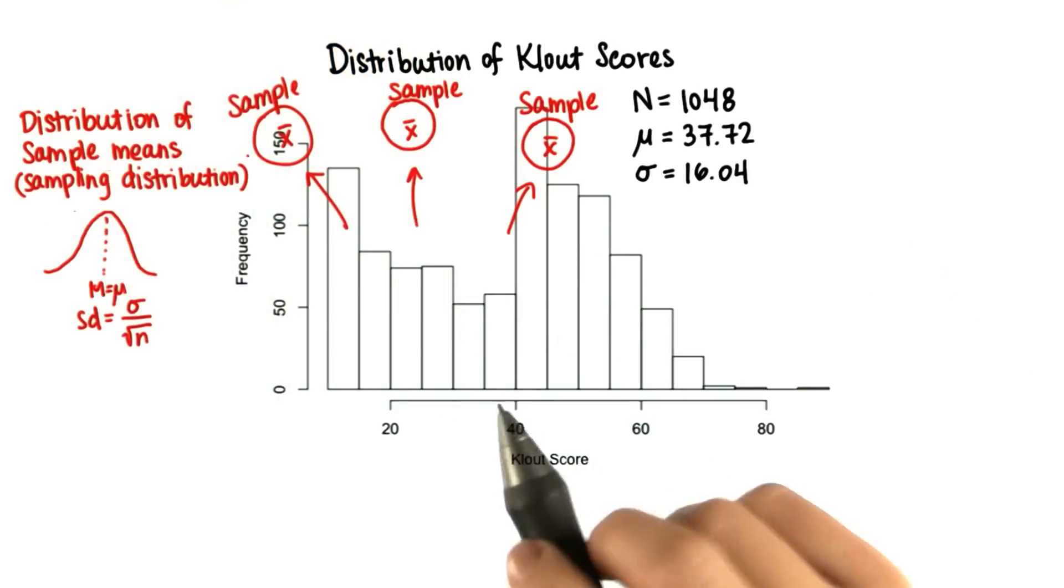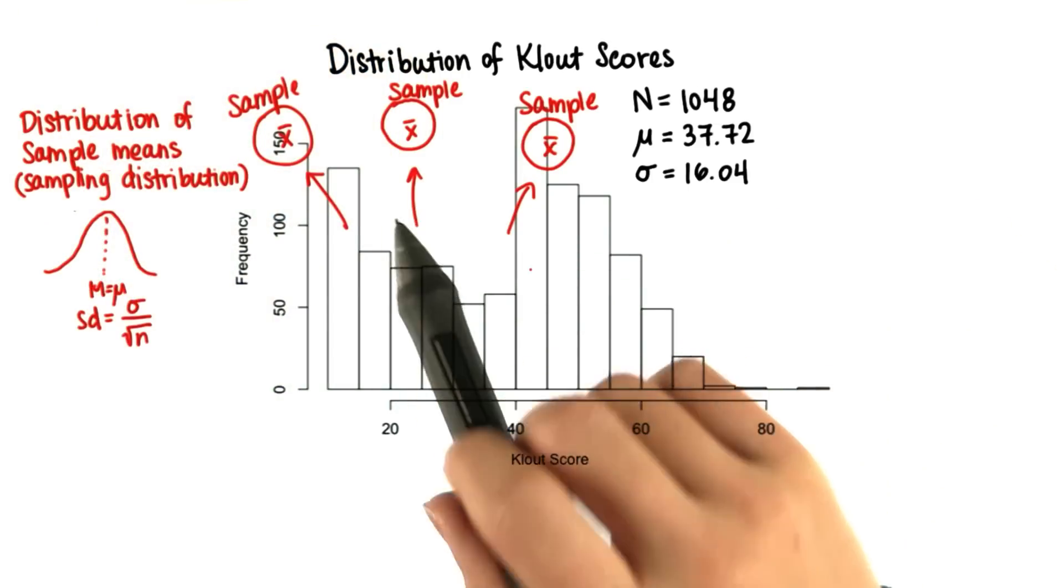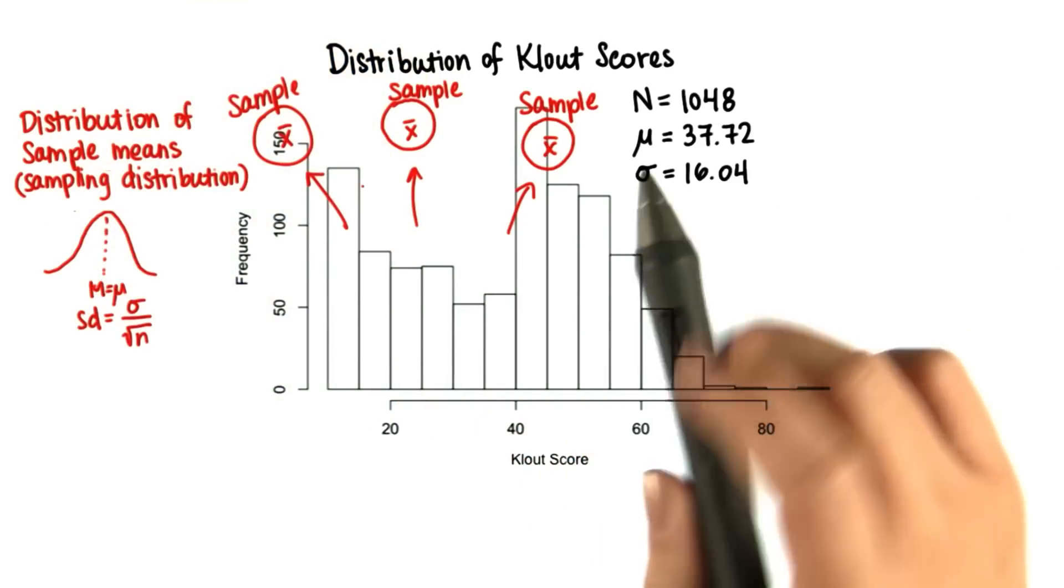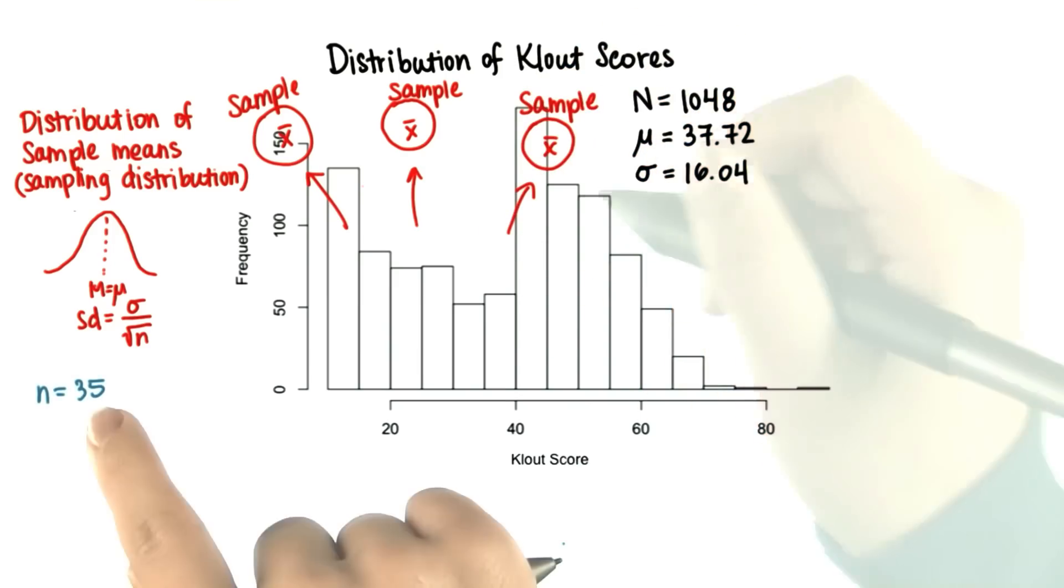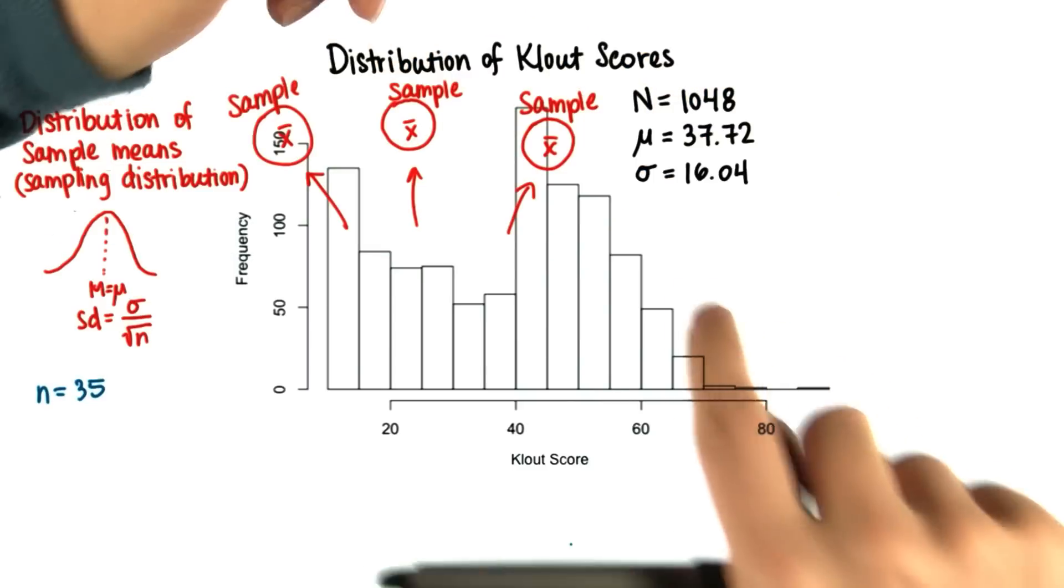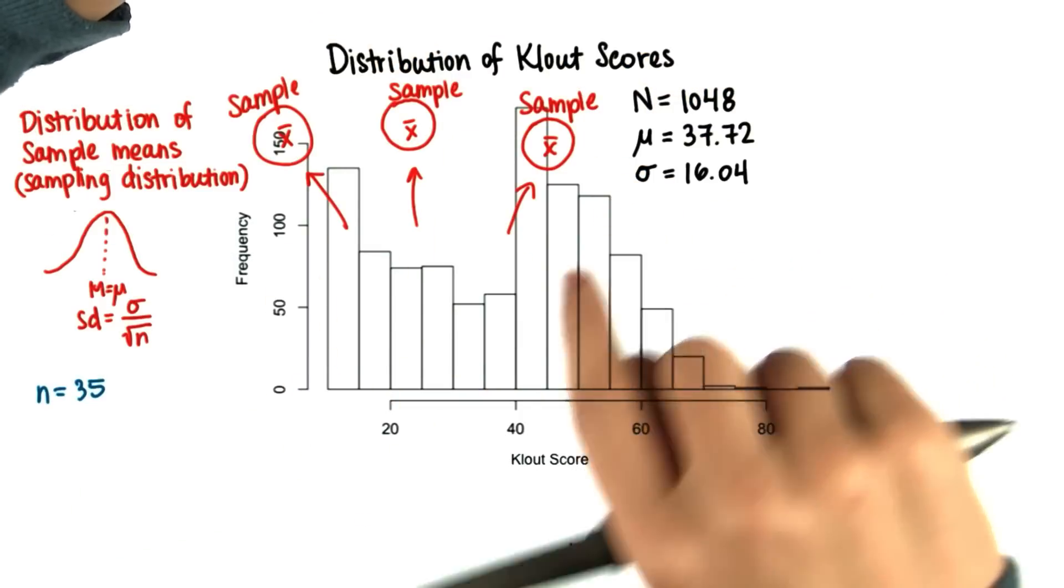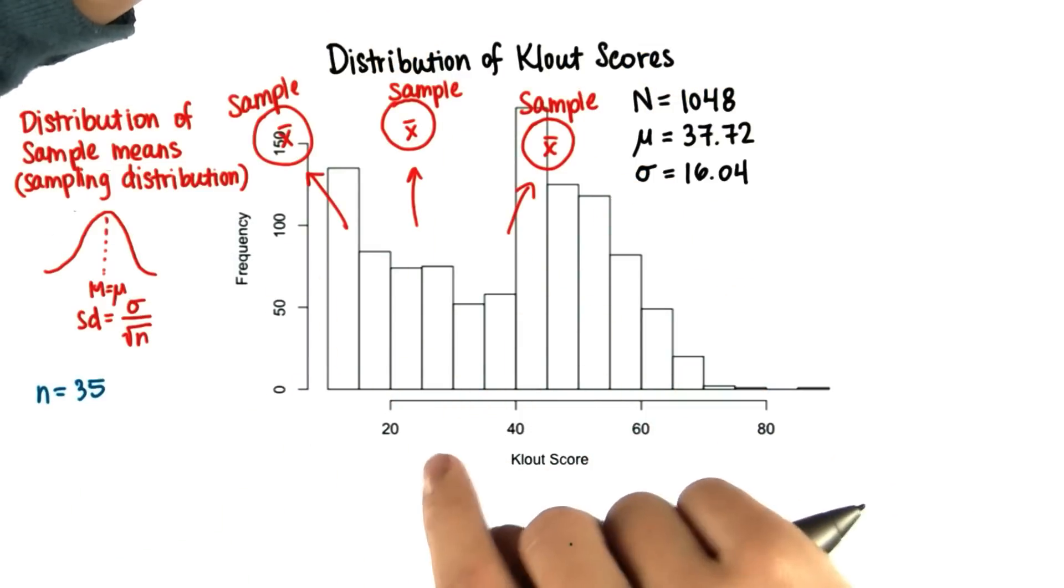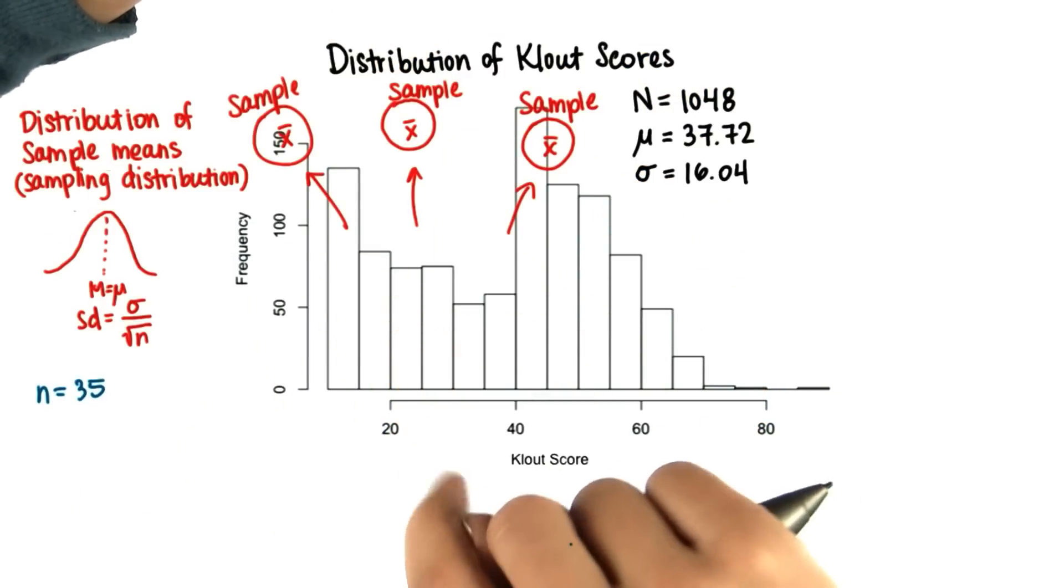In lesson 7, we specifically looked at the sampling distribution created from all samples of size 35. So if we take all samples of size 35 from this population, we find the mean of each sample, and then we plot the distribution of sample means.